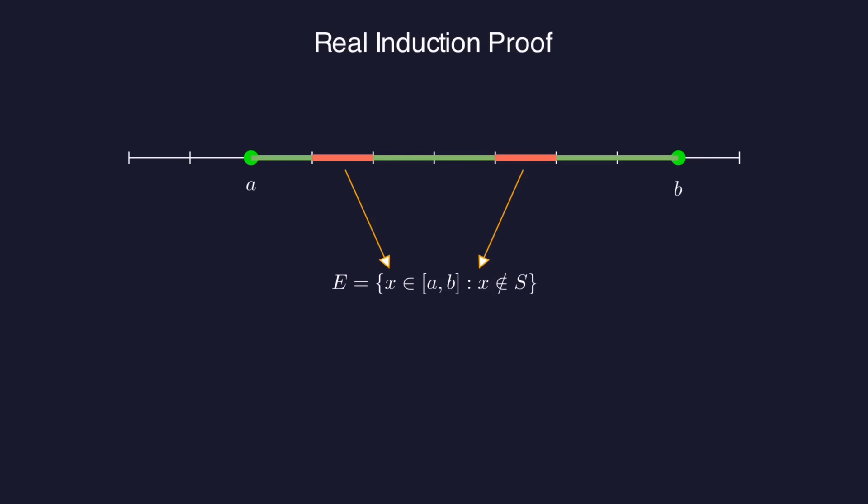Those are the points colored red on our number line. Now in the previous proof we took the smallest exception and derived a contradiction from that. But with real numbers we can't just take the smallest element of a set, we have to take the greatest lower bound, otherwise known as the infimum.